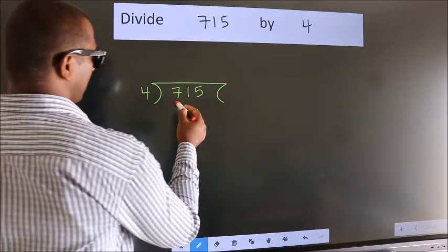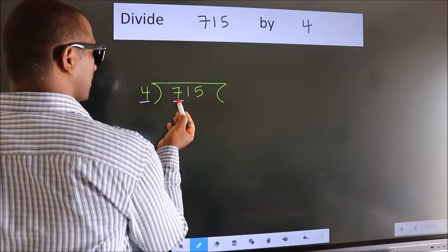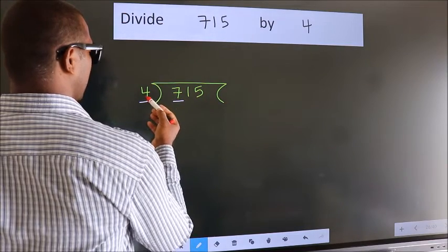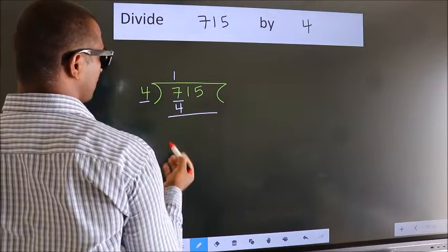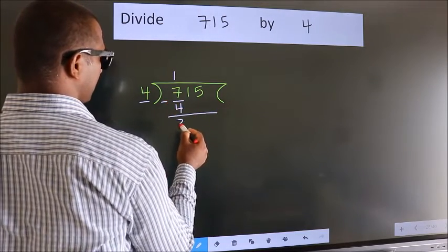Here we have 7, here 4. A number close to 7 in 4 table is 4 ones, 4. Now we should subtract. We get 3.